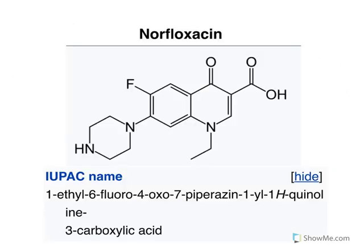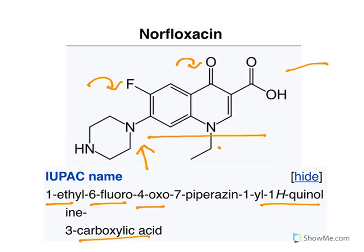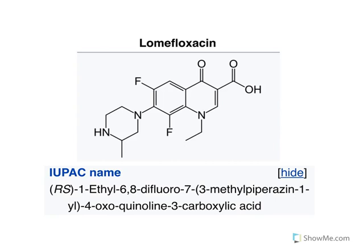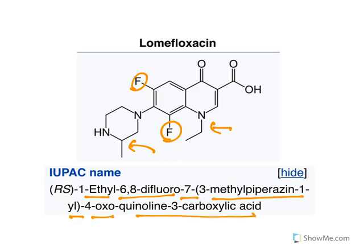For norfloxacin: at position 1, ethyl group; position 6, fluoro; position 4, oxo; position 7, piperazine; quinoline ring; position 3, carboxylic acid. For lomefloxacin: at position 1, ethyl; positions 6 and 8, difluoro (additional fluorine at position 8); at position 7, 3-methyl piperazine; position 4, oxo; quinoline ring; position 3, carboxylic acid.